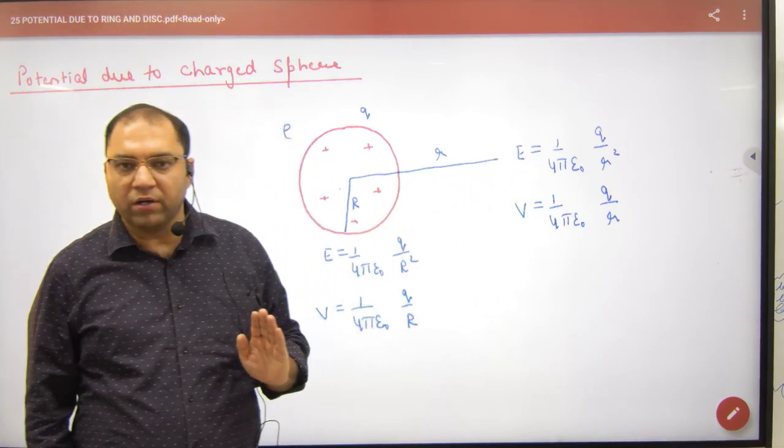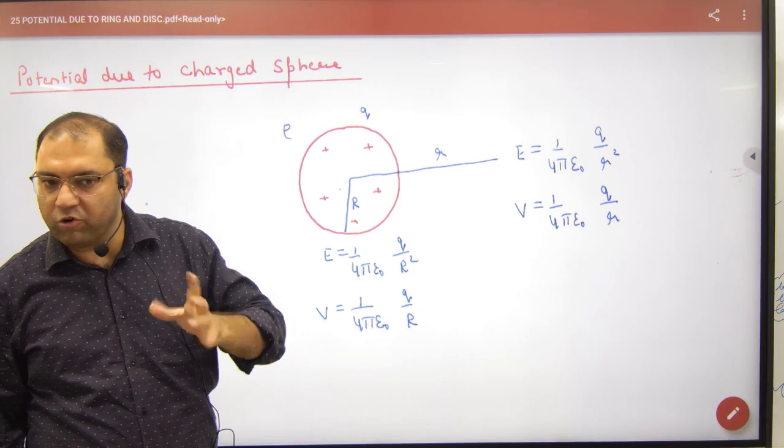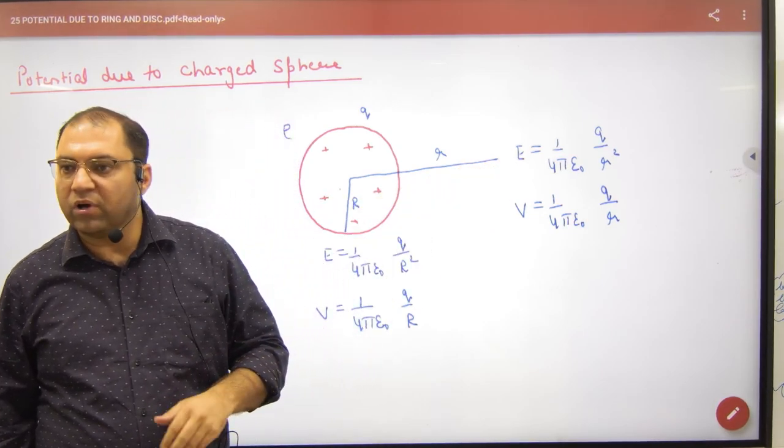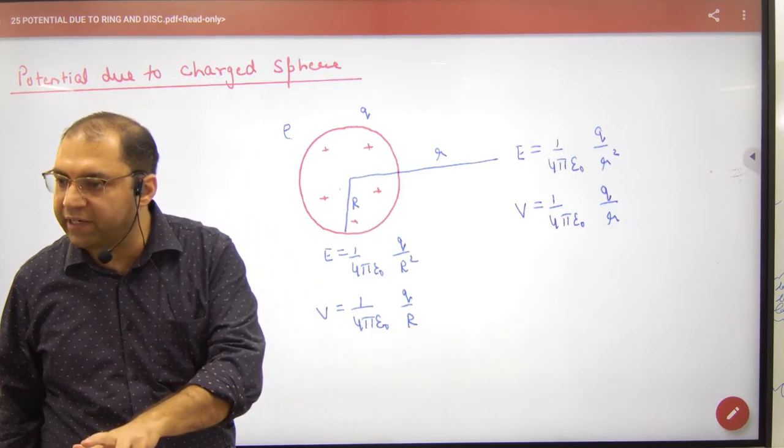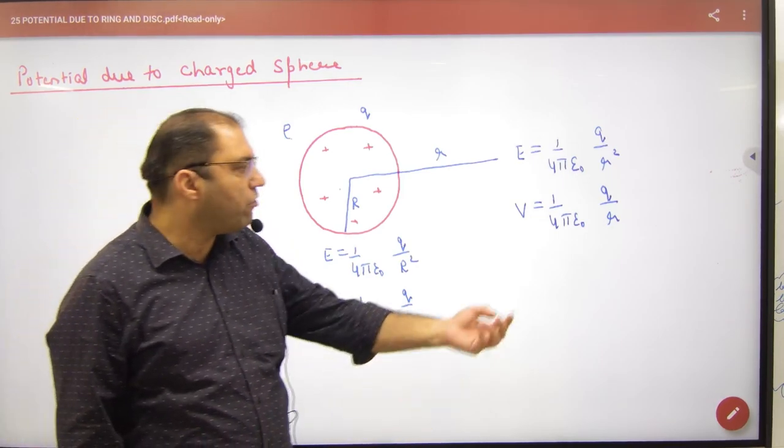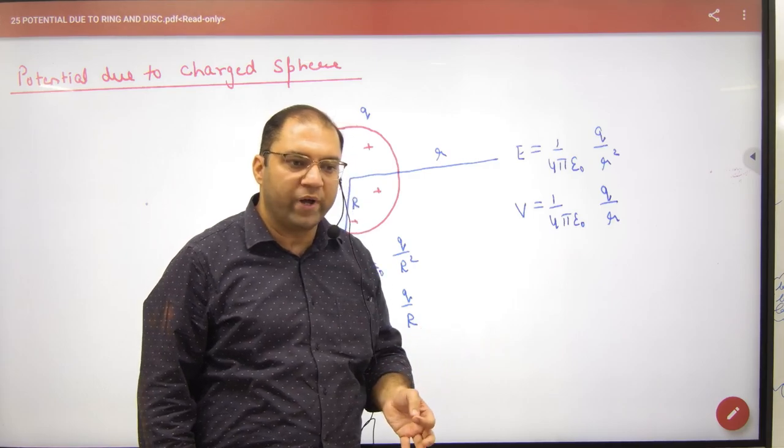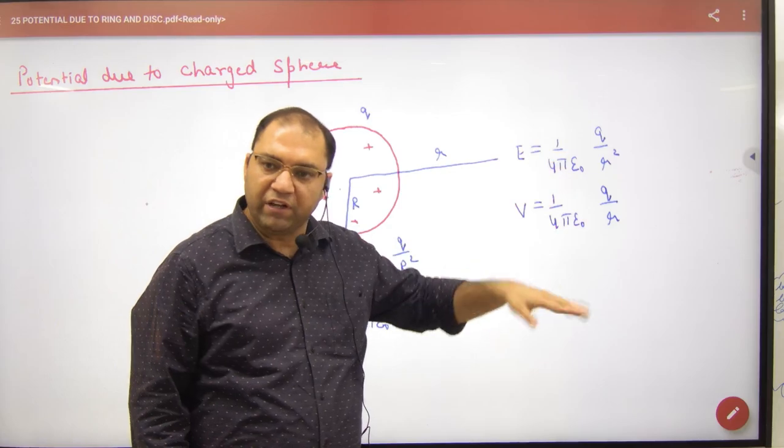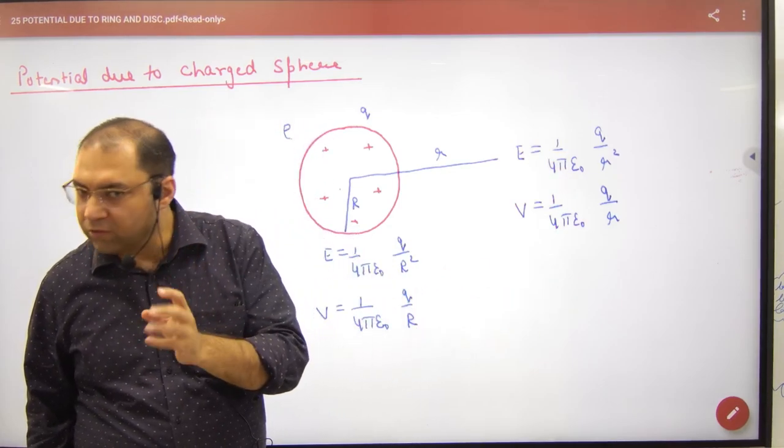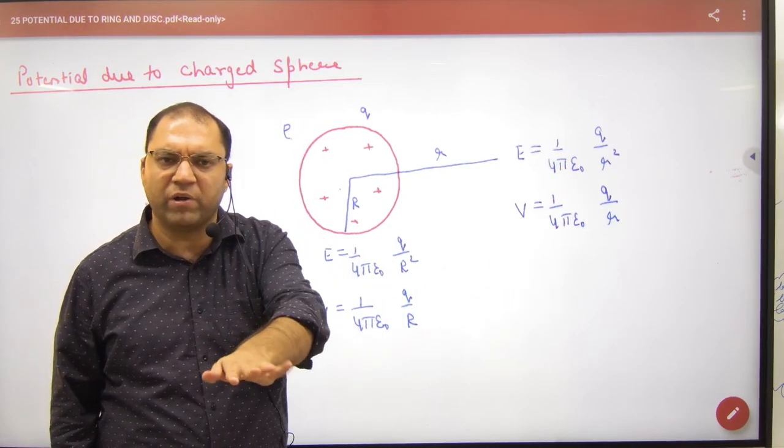E, what would happen here? 1 by 4 pi epsilon not q by small r square. So if shell formula E same, V formula exactly. So V formula 1 by 4 pi epsilon not q by small r. Put out this, so E formula E and V exactly.